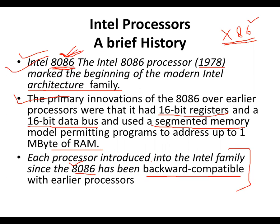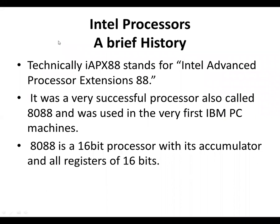So 8086 is a benchmark for all the processors. All processors that Intel has launched after 8086 are kept in this family. Technically, IAPX86 stands for Intel Advanced Processor — that is the full name behind the X86 designation.